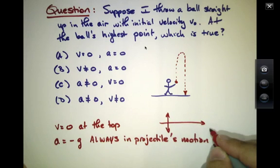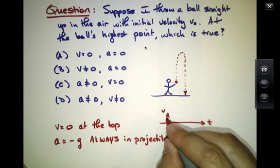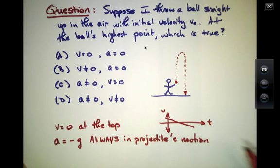If you were to graph it, it would look something like that. It starts out as a large positive number, it goes to zero at the top of the arc, and it becomes a negative number as it comes back down.